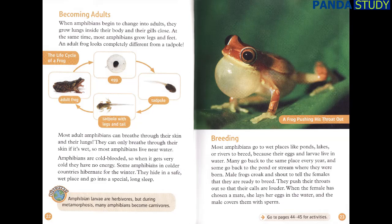Amphibians are cold-blooded, so when it gets very cold, they have no energy. Some amphibians in colder countries hibernate for the winter. They hide in a safe, wet place and go into a special, long sleep.